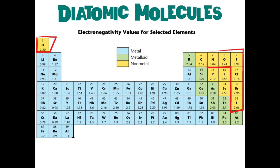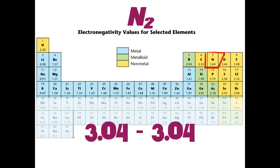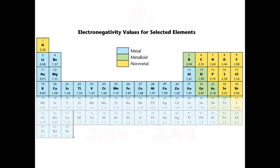I want to go back to diatomic molecules. So diatomic molecules, let's work some of these out. Let's look at nitrogen. You have two nitrogens. So the difference between the two is 3.04 minus 3.04. And of course, you're going to end up with zero.